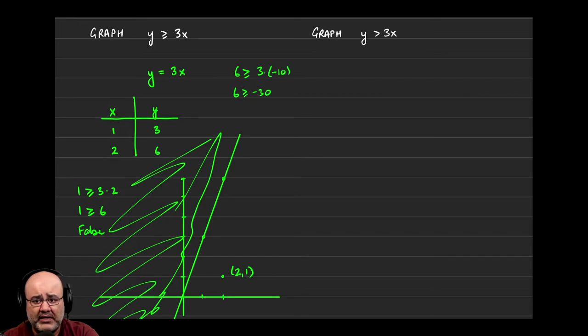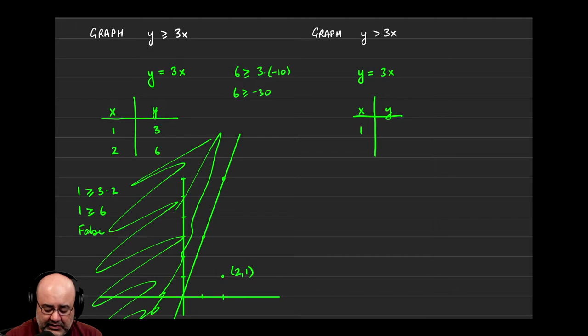For graphing y is greater than 3x, we're actually not going to do anything differently. We start off by doing the exact same thing, writing down y equals 3x. You would still come up with a table of values, you need two points to draw a straight line, and it would still be 1, 3 and 2, 6, because it's still y equals 3x. That hasn't changed.